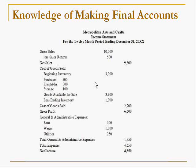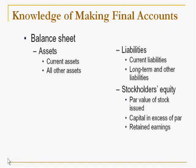The next knowledge is making final accounts. Final accounts is a combination of the income statement, balance sheet, and cash flow statement. In the income statement, we calculate net profit or net loss: gross sales less sales return equals net sales; deducting cost of goods sold gives gross profit; deducting general and administrative expenses and other expenses gives net income.